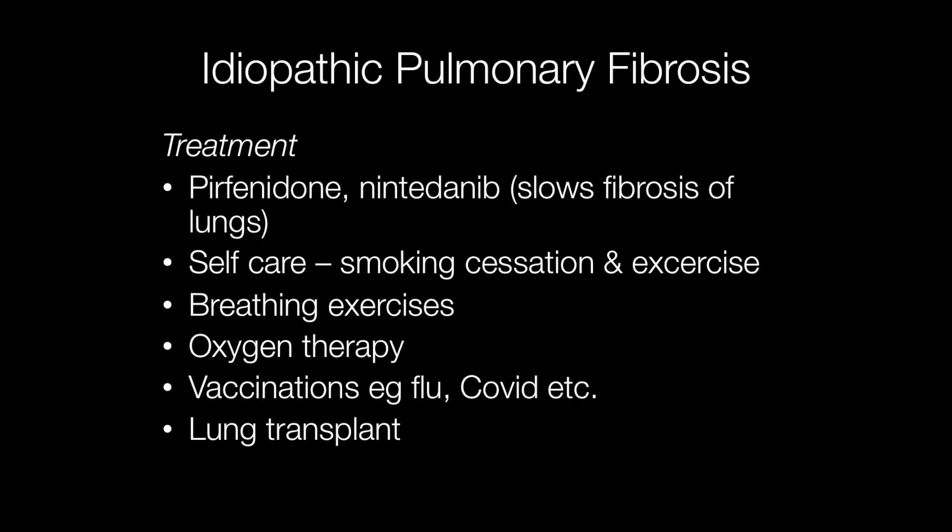IPF is an irreversible progressive condition but there are a number of treatments that may help. Drugs include pirfenidone and nintedanib, and these drugs work by slowing fibrosis of the lungs. Other treatments include self-care such as smoking cessation and exercise, breathing exercises, oxygen therapy, and vaccinations such as flu and COVID. But the only curative treatment is lung transplant.